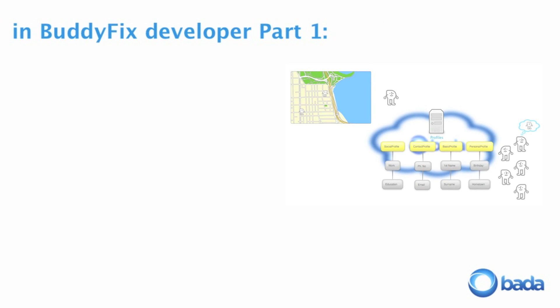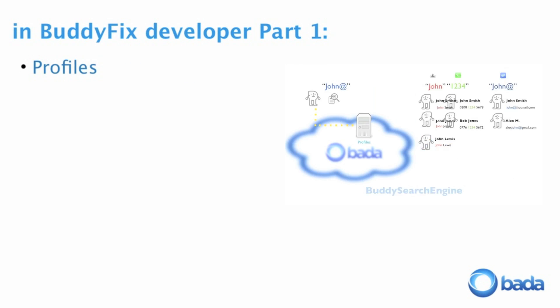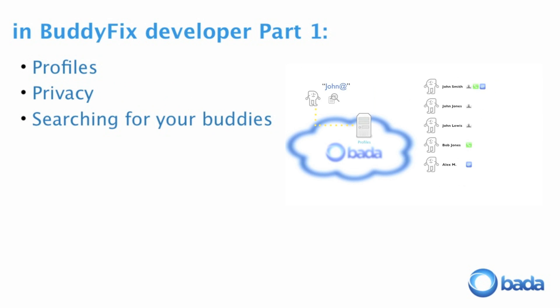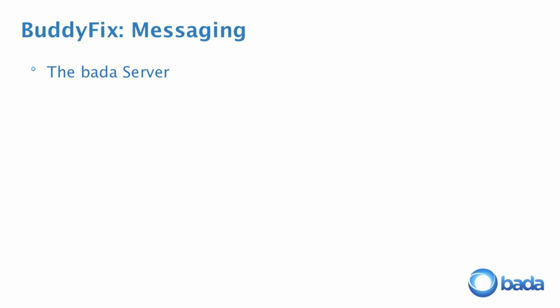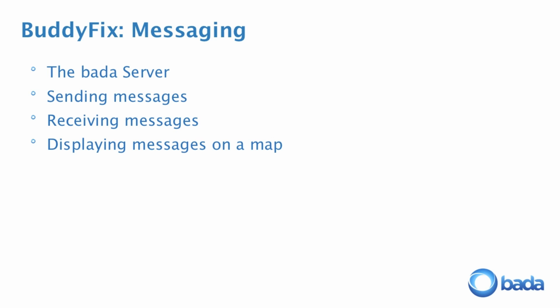In the first of the BuddyFix developer videos, we showed you how to implement profiles and privacy, and how to search for your buddies. In this video, we will look at the roles of the Bada server in messaging, how messages are sent and received, and how BuddyFix displays the last message from a user, together with the last known location on the map.